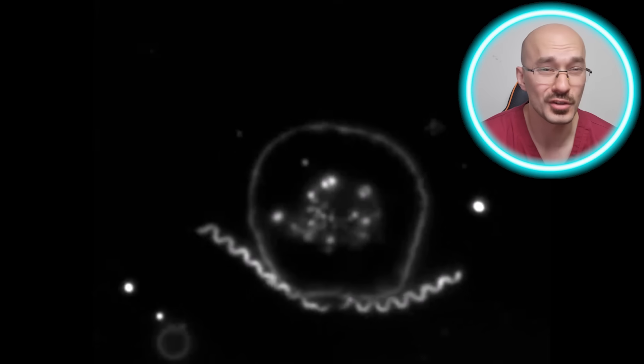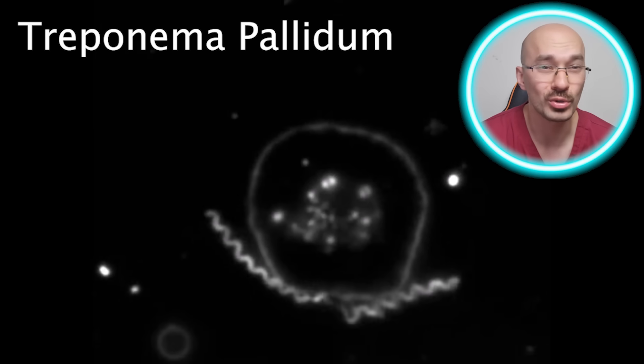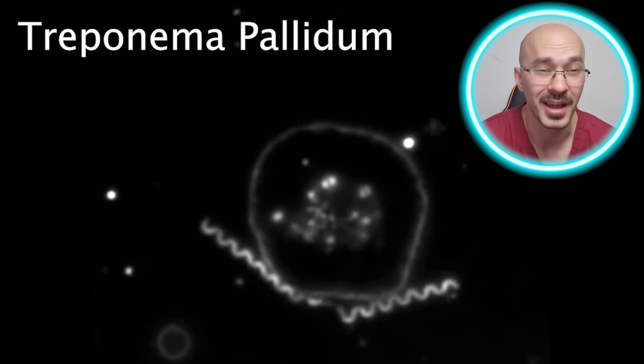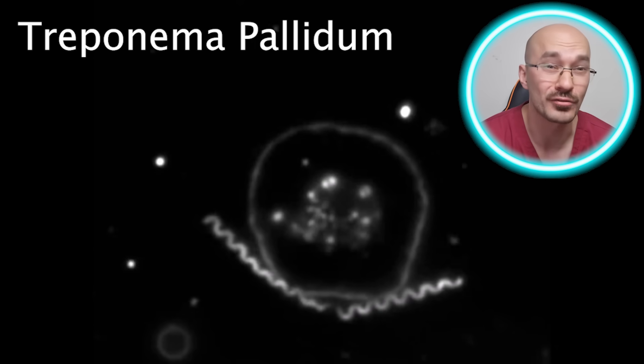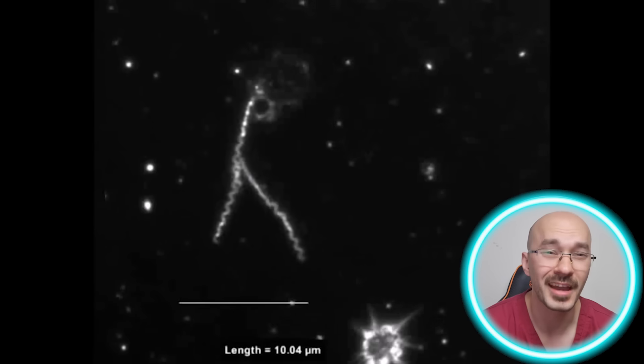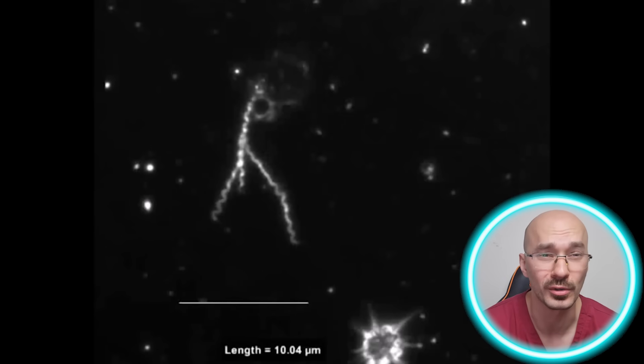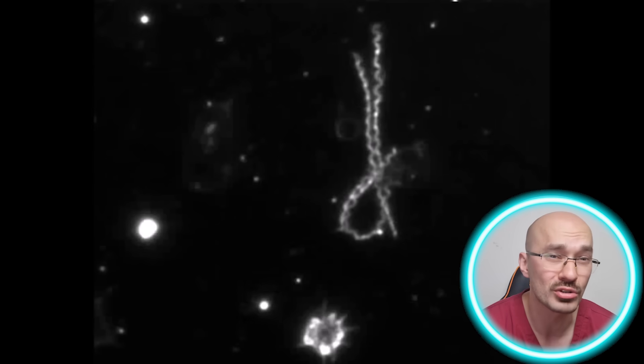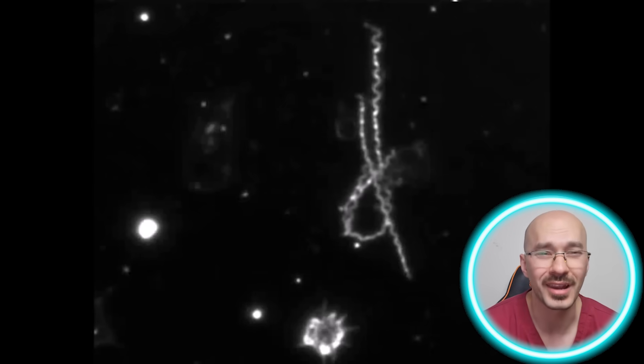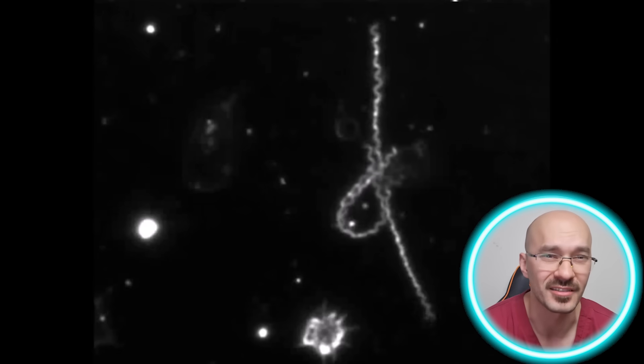Before we get into the nitty gritty of the three horrific stages, let's recap what syphilis actually is. Syphilis is caused by the bacteria called Treponema pallidum, and it's usually transmitted through sexual contact. Unlike other bacteria, it's neither rod-shaped nor spherical, but rather it's more corkscrew shaped, which helps to allow it to infect other cells.